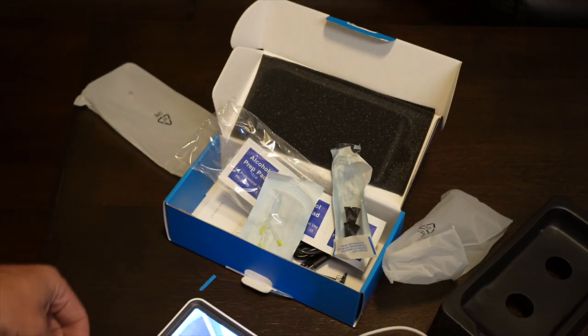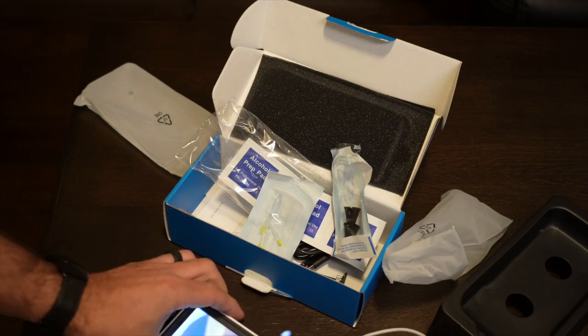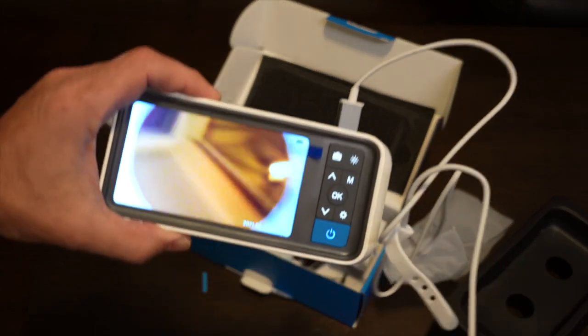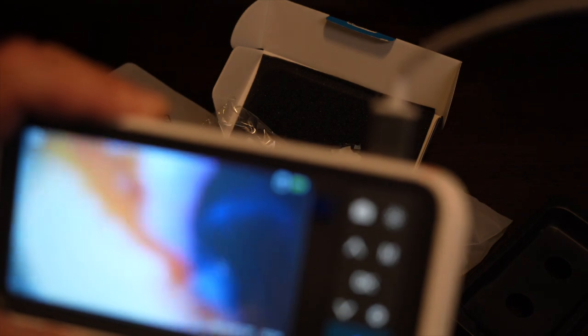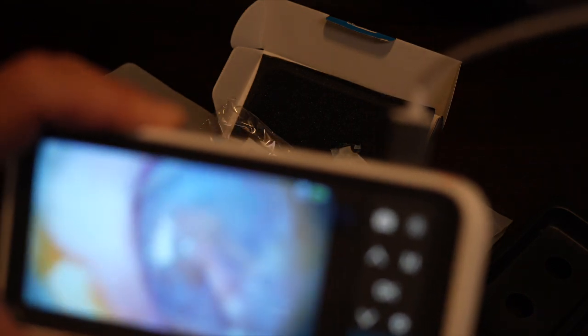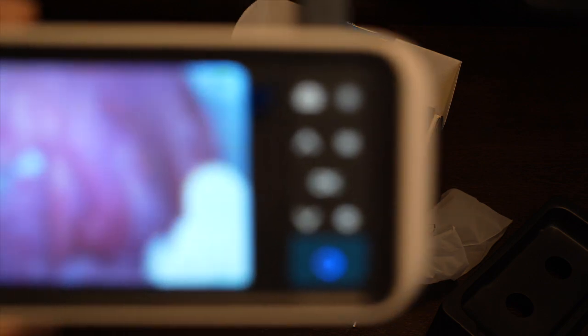These are not regular otoscope tips, not like you can use the regular Welch Allyn ones. It's got some kind of mechanism inside to fit to the camera so that it doesn't fall out. And then I'm introducing it into my ear, yeah, got a little wax there, that's no biggie, that's where it's meant to be. And you can see right there, the image is not great there because it's not on focus, but as you're going to see soon on the image that it captures, it's amazing quality.